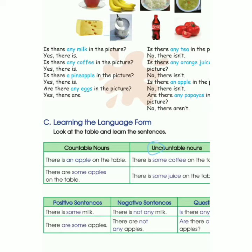Selanjutnya, There are some apples on the table. Bisa dihitung — sum-nya itu berapa? Mungkin ada 50 apple, ada 30 apple. Nah, bisa menggunakan 'There are some apples'. Kalau misalnya apple-nya dua: There are two apples on the table.